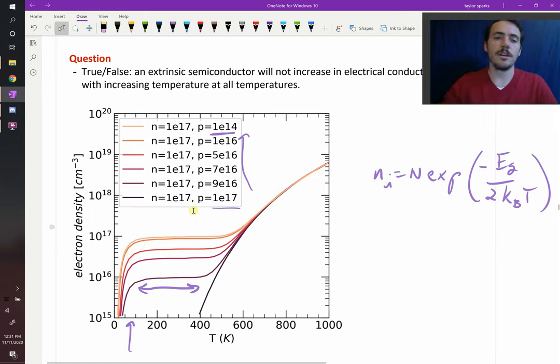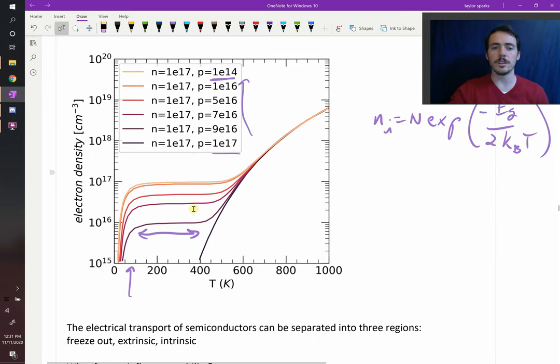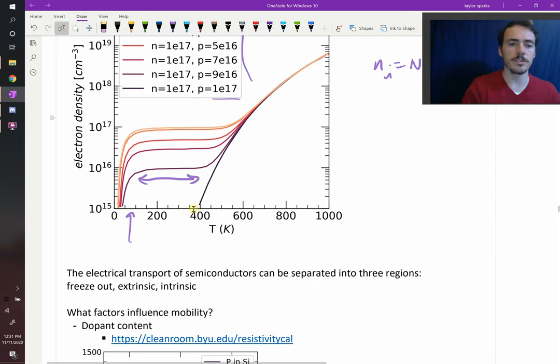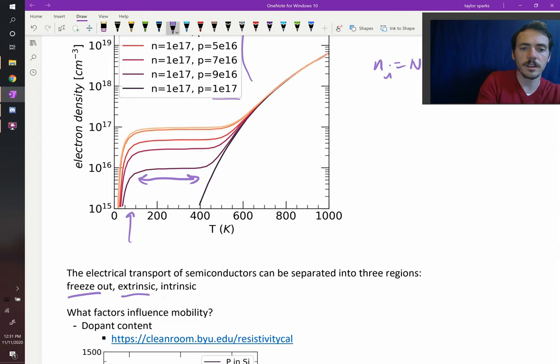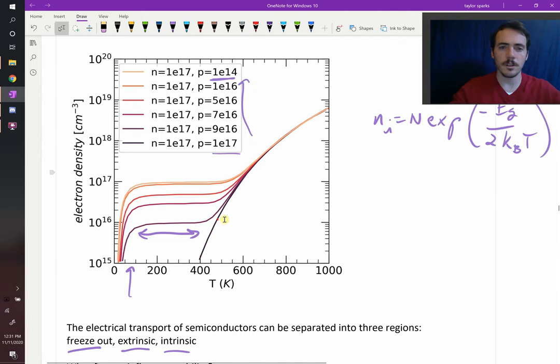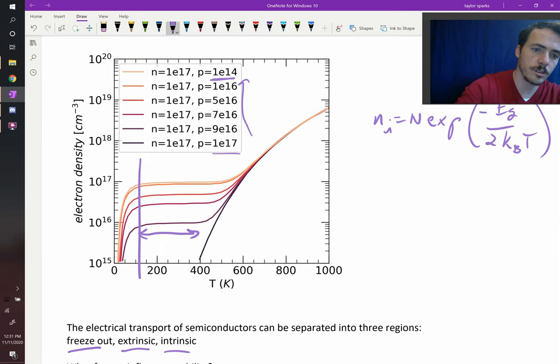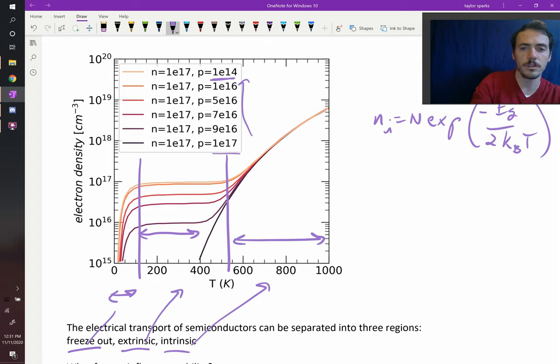So that shows you that you have these three regions: freeze-out, extrinsic, and intrinsic. Any semiconductor that has been doped is going to have these three regions. This region over here we call freeze-out. This region in the middle we call the extrinsic region. And this region over there is the intrinsic region. Any semiconductor, if you heat it up high enough, it's going to switch to intrinsic. You're giving it so much thermal energy that electrons can jump across the gap, and you're not relying on some finite number of dopants to get carriers.